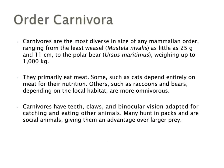Our next order is Carnivora, which is by far the most diverse in size of any mammalian order, ranging from weasels to polar bears. They generally eat meat — some depend solely on meat, while others are more omnivorous, like bears and raccoons. They all have teeth, claws, and binocular vision adapted for capturing prey. Many will hunt in packs as social animals to give them an advantage over larger-bodied prey.